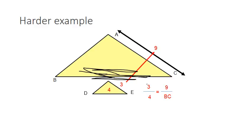We'll do a little cross multiplying: 3 times BC equals 9 times 4. Then I'll divide both sides by 3, meaning BC works out to be 12.